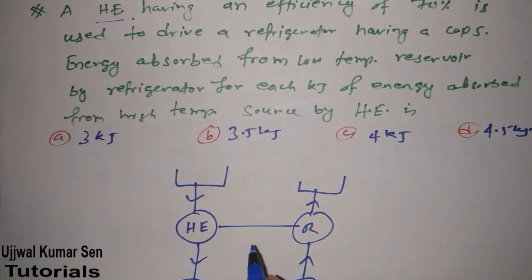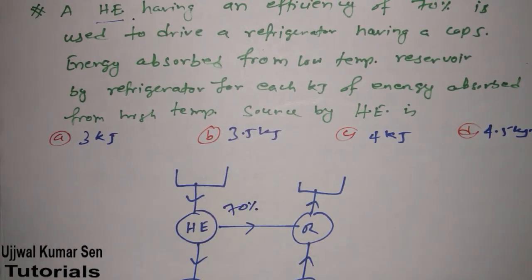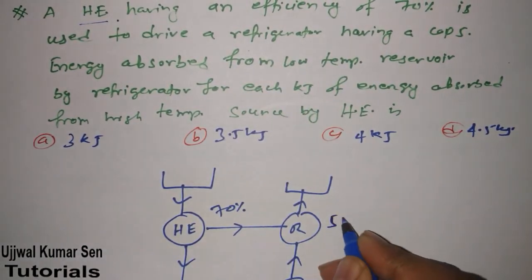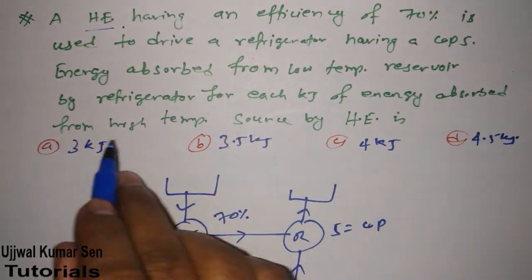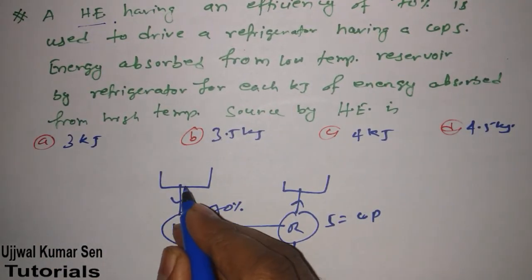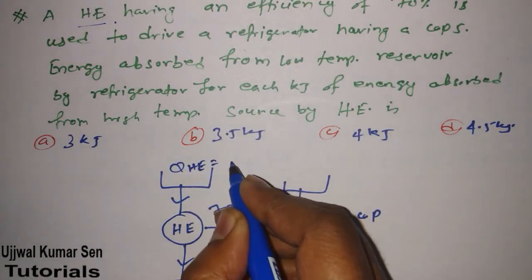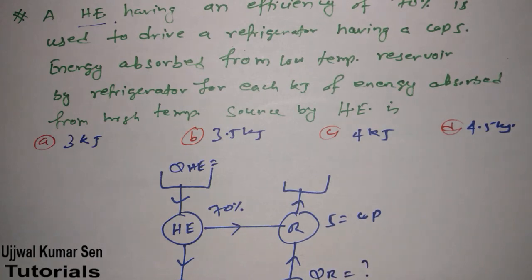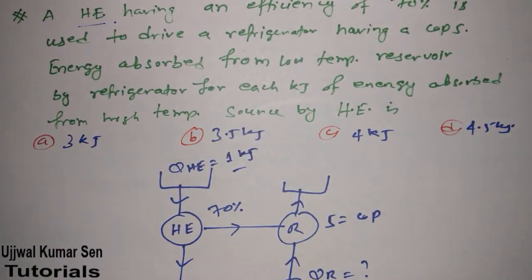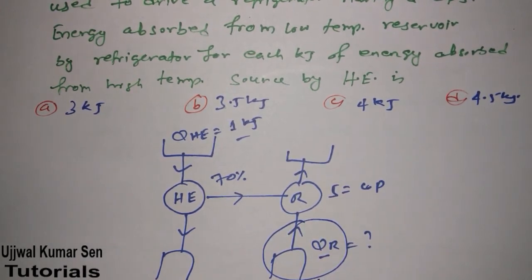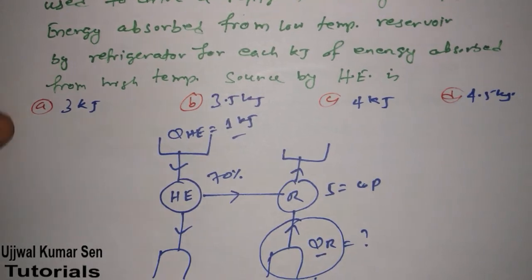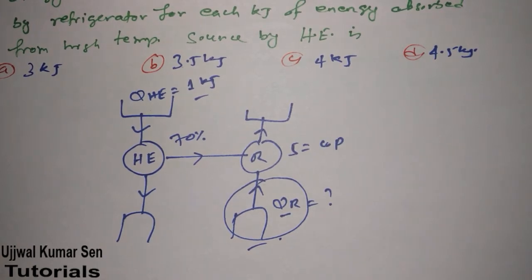The heat engine has an efficiency of 70 percent, and it is used to drive a refrigerator whose COP is 5. We need to find the energy absorbed from the low temperature reservoir by the refrigerator (Q_R) for each kilojoule of energy absorbed from the high temperature source by the engine. So if Q_H = 1 kJ, what is Q_R — the desired effect of the refrigerator?